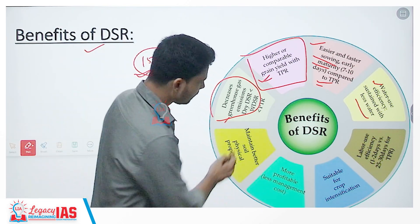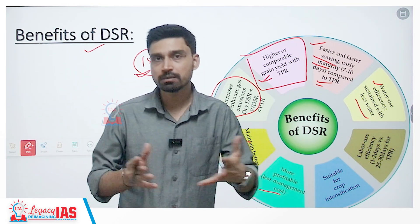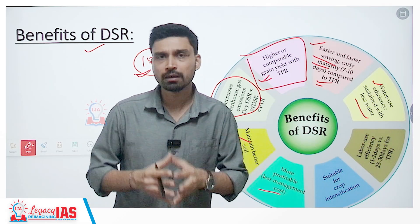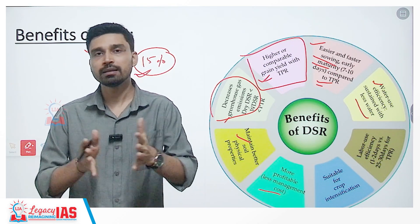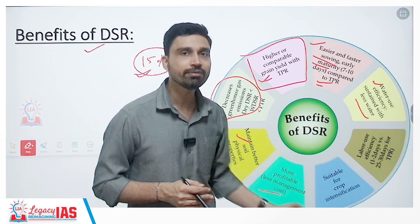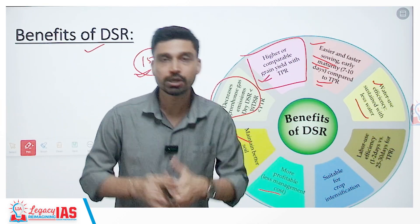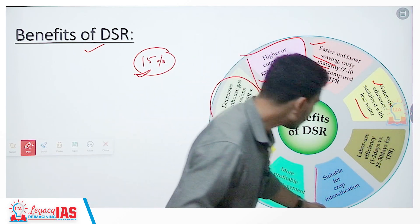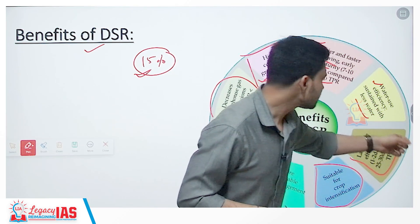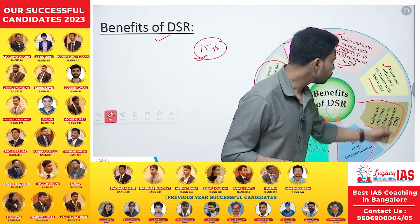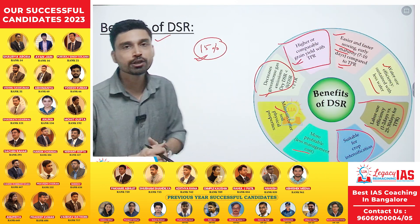DSR also maintains better soil physical properties and is more profitable because management cost is less. The major cost of rice cultivation goes into labor, and since labor requirement is less in DSR, you can cut down significantly on input costs, translating into higher profit margins for paddy farmers. DSR is also suitable for crop intensification, and labor use efficiency is much better — only 1 to 2 days of labor versus 25 to 30 days needed in the traditional method.